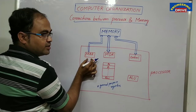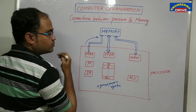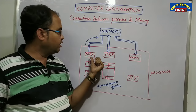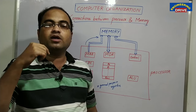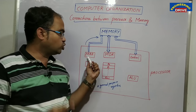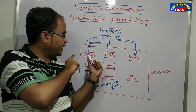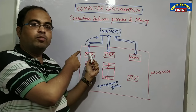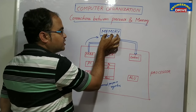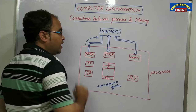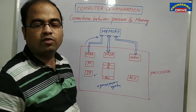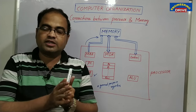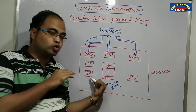When our processor fetches the first instruction from memory, step number one is that the processor will specify the address. This is stored in a register called MAR — Memory Address Register. MAR stores the address where the instruction is available in main memory, because the processor wants to fetch that instruction for execution. After that, the instruction will be brought from main memory and temporarily stored in a register known as IR — Instruction Register.